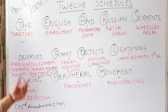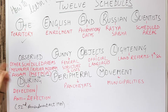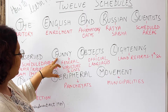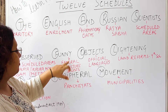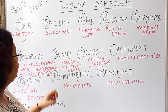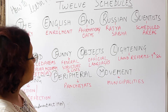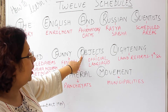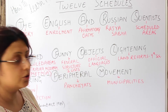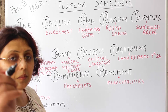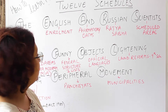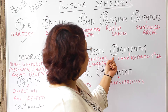Next is 'Funny' — we take F, which stands for Federal Structure, like the three lists in the 7th schedule. Then 'Objects' — we take O for Official Languages mentioned in the Constitution for the 8th schedule. How many official languages are in the Constitution? Do write your answer in the comment box!